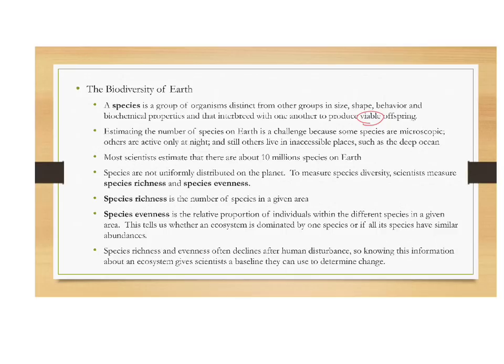Estimating the number of species on Earth is a challenge. A whole bunch of species are microscopic, some are active only at night, and others live in inaccessible places such as the deep ocean — you're not going to send a submarine down to count worms in the Marianas Trench. So we have to extrapolate from what we know. Most scientists estimate there are about 10 million species on Earth, give or take.